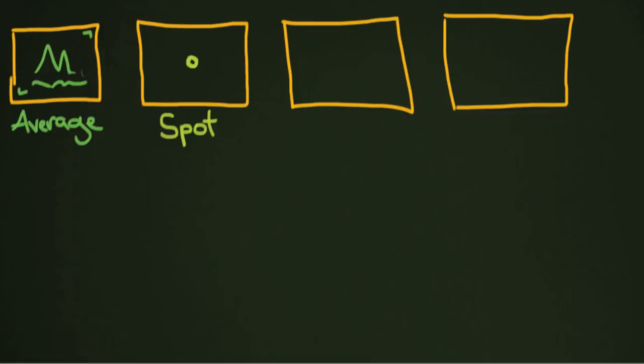Your next kind of metering system is called center-weighted. You'll have sort of a big spot here, and then sometimes a slightly bigger one around the outside. Center-weighted basically means there's a spot in the middle that's light sensitive, and then a bigger spot around the outside, and maybe a tiny bit out here. It might take 50% of its information from here, maybe 40% from here, and 10% from here, for example.